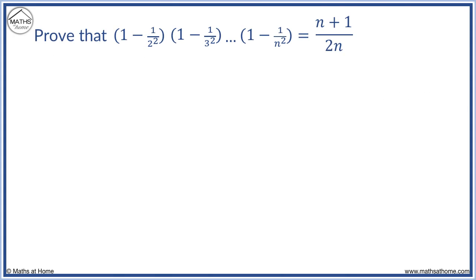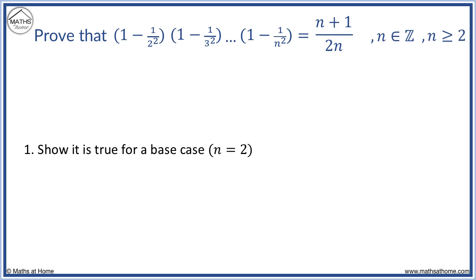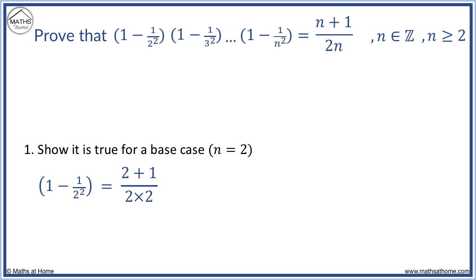Here is another example. We will prove it for all integer values of n greater than or equal to 2, so we use n equals 2 as our base case. Substituting n equals 2 on the left, we obtain 1 minus 1 over 2 squared. On the right, we obtain 2 plus 1 over 2 times 2. We get 3 quarters equals 3 quarters, and so the base case is true.